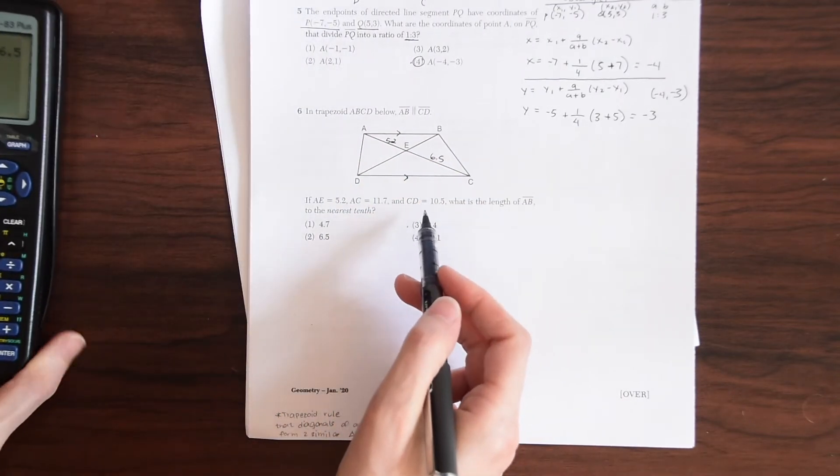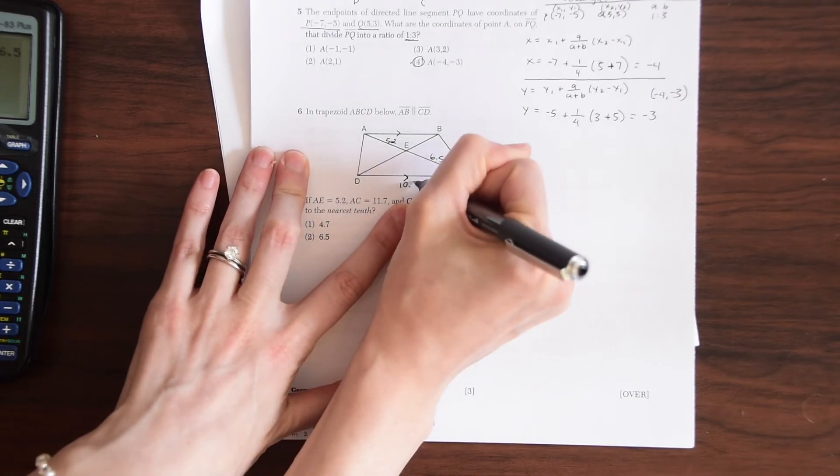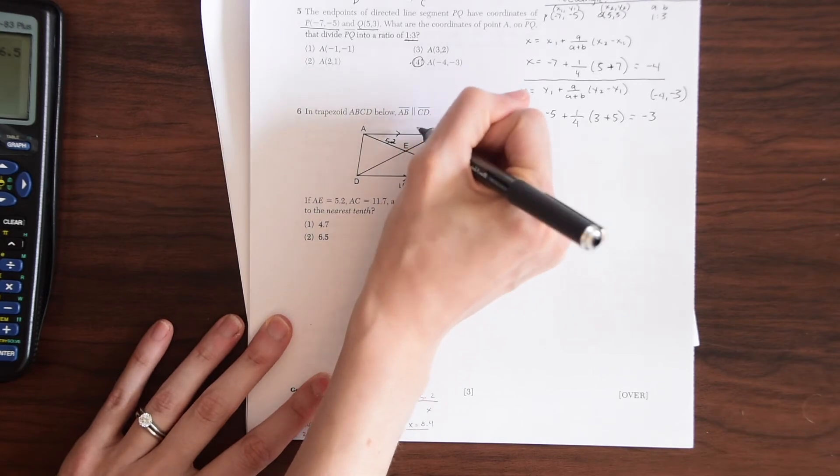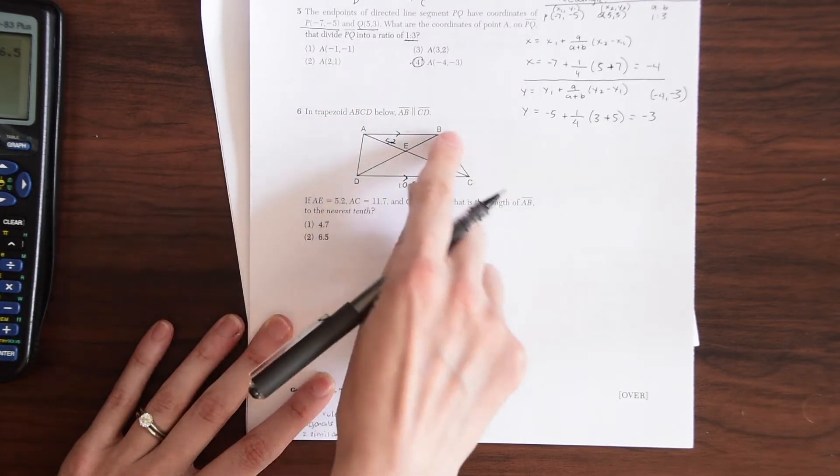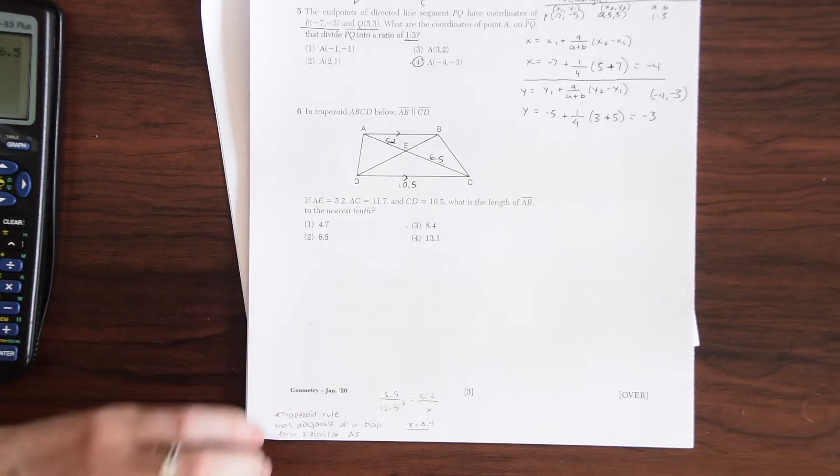And they also give us CD is equal to 10.5. So CD is 10.5. What is the length of AB? So we want to find this length up here. AB to the nearest tenth.